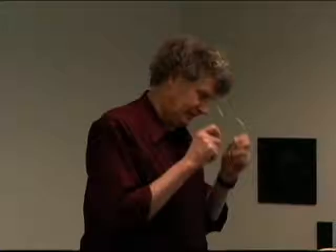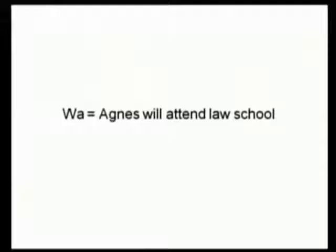These are the names for particular things when we want to represent sentences and pick out the subjects of those sentences. The lowercase letters up through U will be used as names. And the way that we're going to write this is something like: W stands for 'will attend law school' and A is the name we're giving to Agnes.